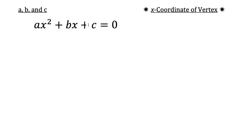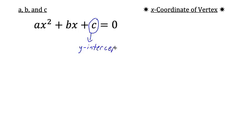There is one clue about the graph of a quadratic equation that we can get just by looking at the equation. Unfortunately it's not a very good one, but sometimes it can be helpful. The c here tells us the y-intercept. It doesn't tell us anything about the vertex, but sometimes knowing this can save us a little bit of work.